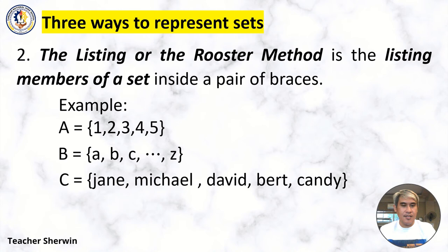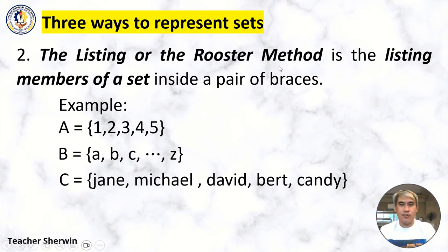And then Set C is the set of {Gene, Michael, David, Bert, and Candy}. So this is how we do the listing — you just write all the elements using the roster method.